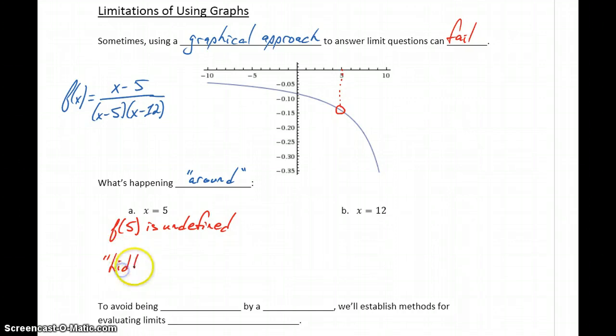But characteristics of a graph like that are typically hidden by technology. So whatever tool we use to graph this function, usually this hole in the graph won't be indicated. So we don't see that in this graph, even though technically it should be represented there.